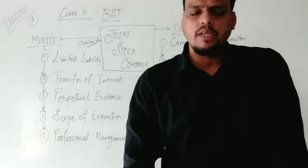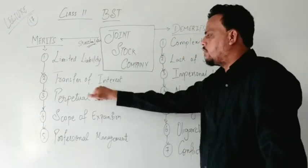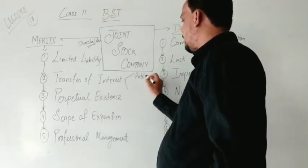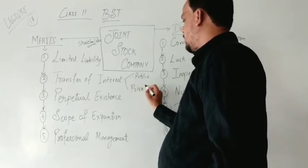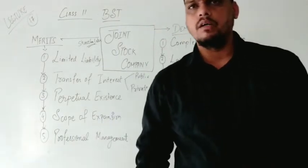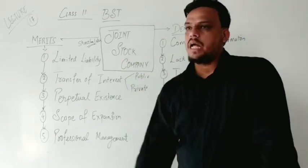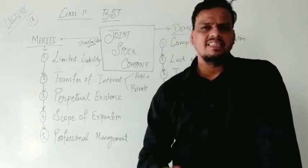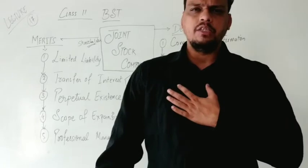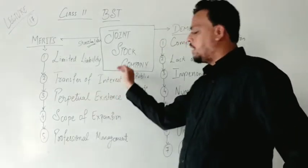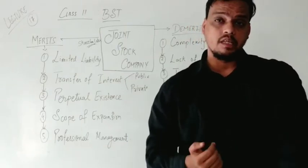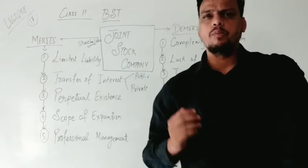The next point is transfer of interest. When talking about transfer of interest, we have two categories: one is public, and another is private. As a shareholder of a public joint stock company, transfer of ownership is very easily and freely moved from one person to another. For example, if I am a shareholder of a public organization, I can purchase shares in the market and also easily sell those shares in the market.